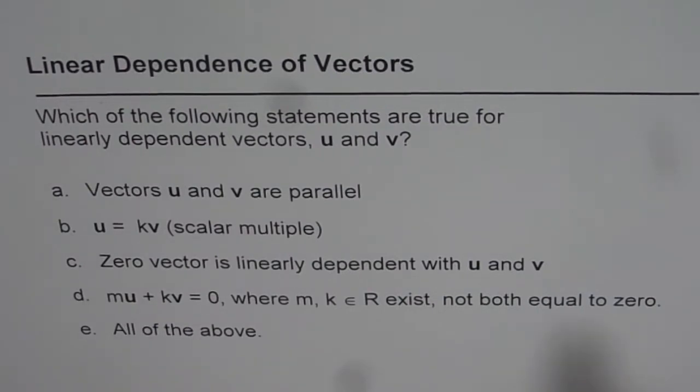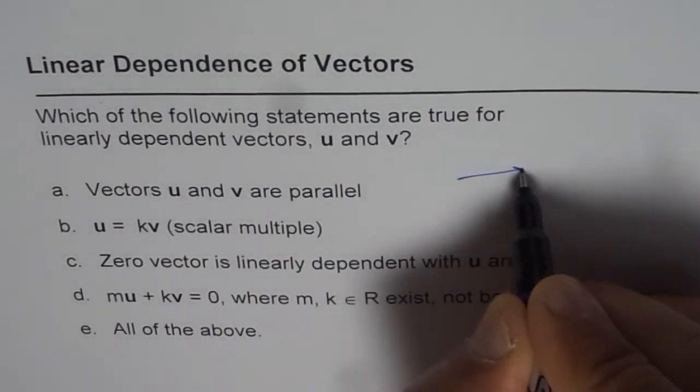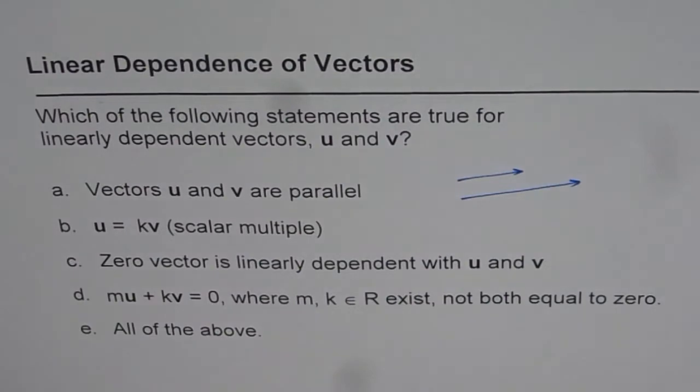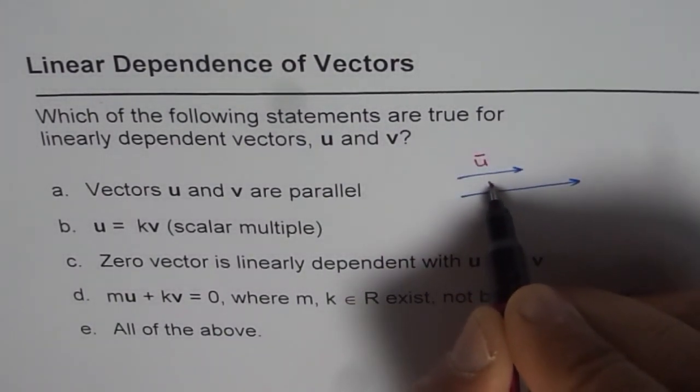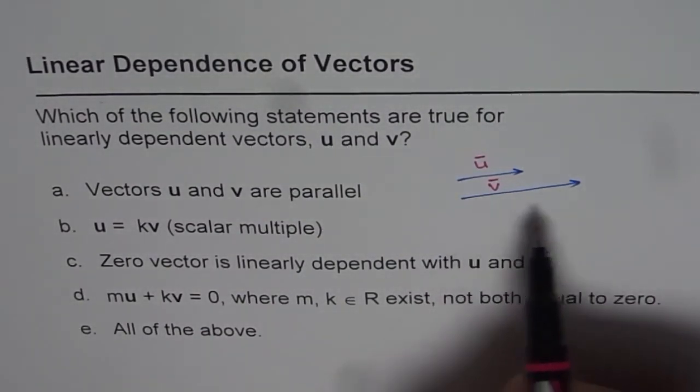If the two vectors are linearly dependent, they should be parallel. That means if one vector is like this, the other one is parallel. Their magnitudes could be different, but they need to be parallel. This is let us say u and that is v. If two vectors are parallel, we can say they are linearly dependent.